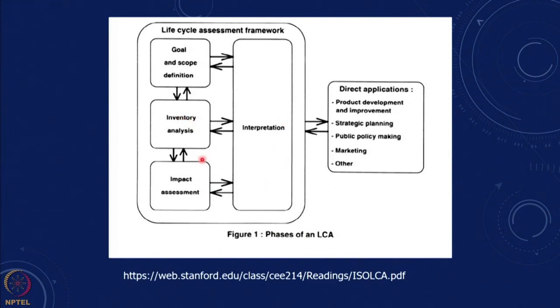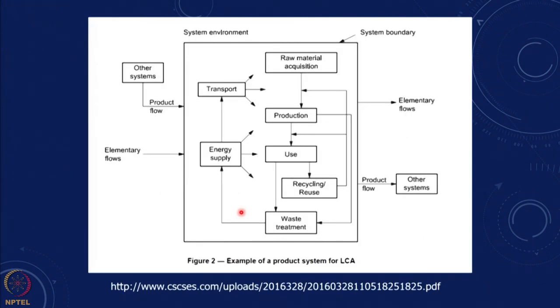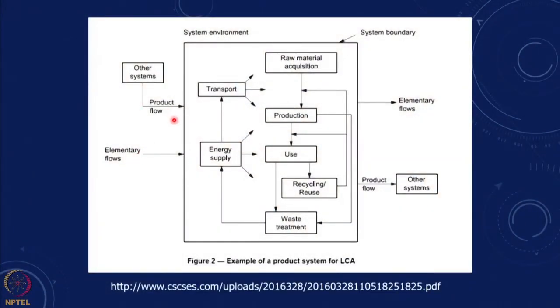This is the LCA framework from the ISO manual, which gives you the direct applications. When we look at a product system, we need to identify the different kinds of flows in the system. When creating a product, materials come in — raw materials — and there will be flows into the system. These raw materials are converted through a production phase, a use phase, recycling and reuse, waste and waste treatment, energy supply and transport, and finally the product flow.